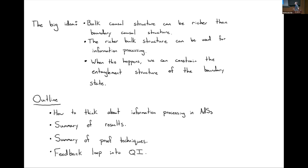When we have some very rich causal structure, that's something we can use for information processing. If I have some qubits distributed throughout spacetime and there are various causal ways that those qubits can be brought together, that's something I could use to act on the qubits and process them. The big idea is that whenever we have a situation where bulk causal structure is richer than boundary causal structure and that rich structure can be used for information processing, we can use information theoretic reasoning to constrain the entanglement structure of the boundary state.